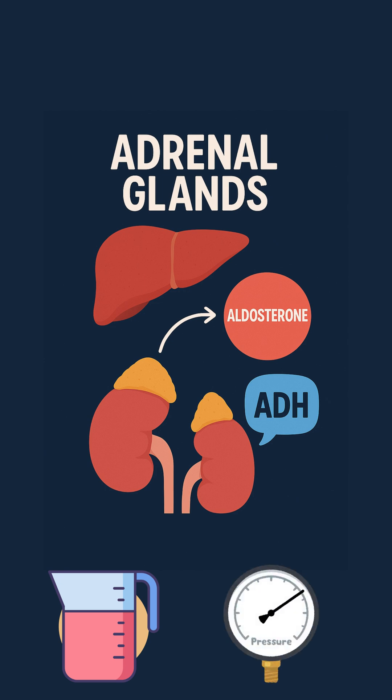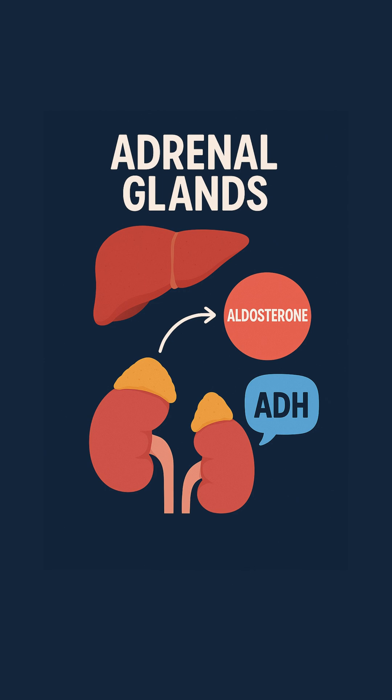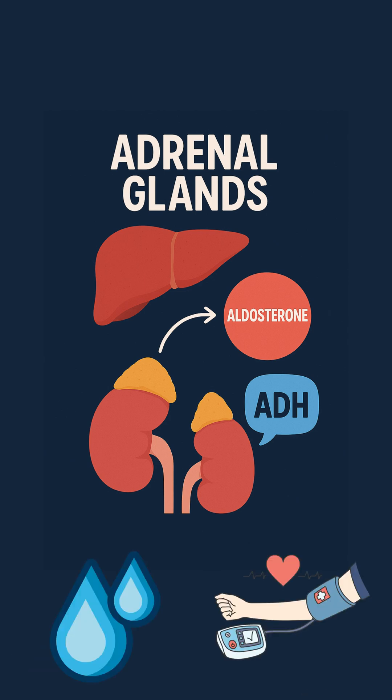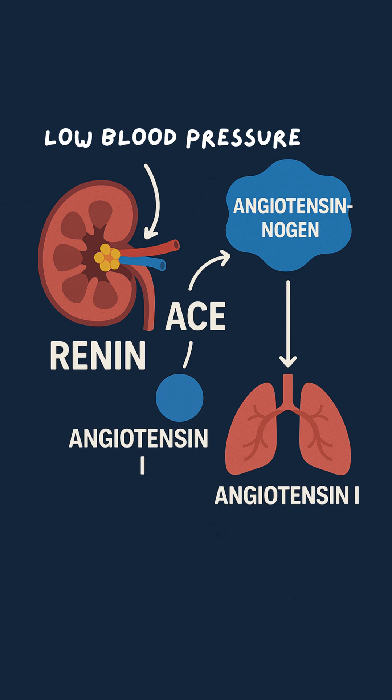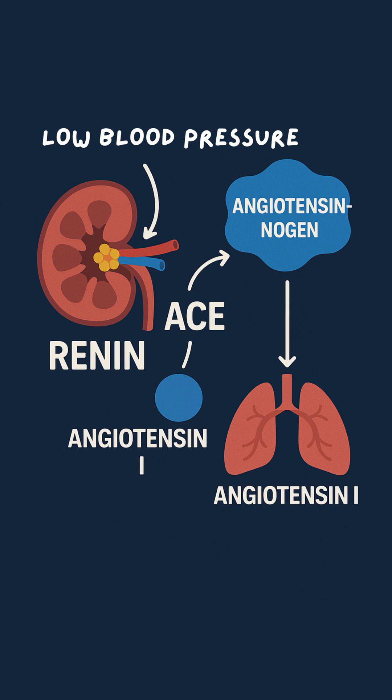In some cases, ADH, or antidiuretic hormone, is also released to promote water reabsorption and support blood pressure maintenance. This cascade, known as the RAS system, is the body's primary method of regulating blood pressure and fluid balance. Understanding this pathway is essential to grasping how the body responds to hypotension and maintains homeostasis.